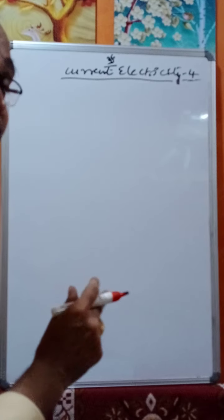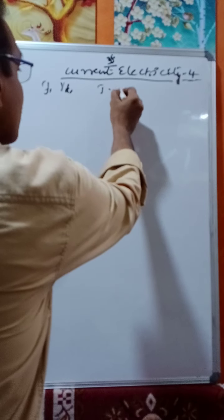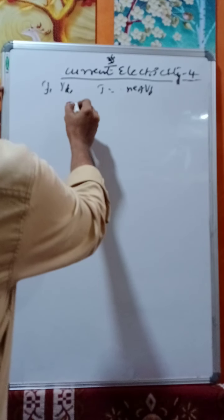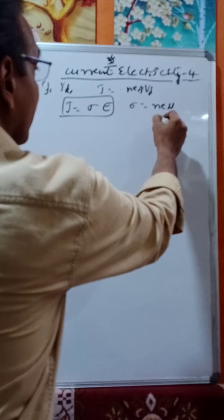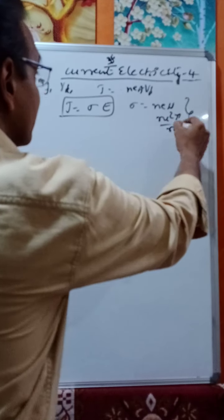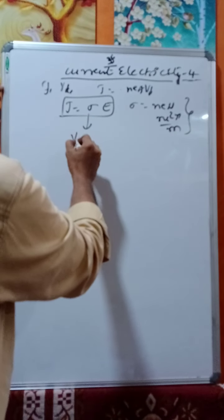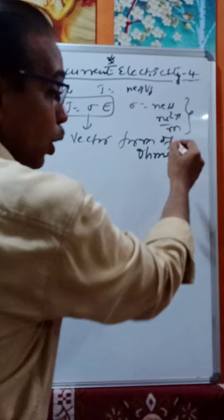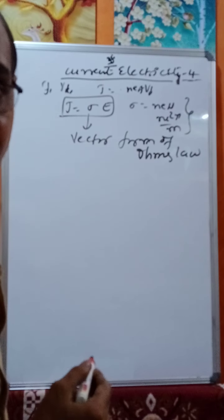In current electricity lecture three, we discussed the relation between current density J and drift velocity vd, that is J equals negative ne times vd. We derived this equation and also derived J equals sigma E, where sigma equals ne·mu or ne²tau/m. This is called the vector form of Ohm's law. Generally we say Ohm's law is V equals IR, but J equals sigma E is also Ohm's law — the vector form of Ohm's law.